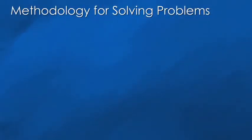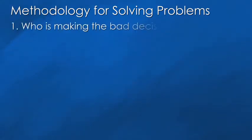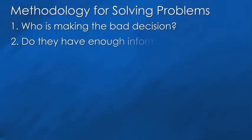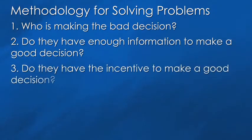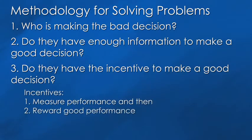You simply ask three questions: Who's making the bad decision? Do they have enough information to make a good decision? And do they have the incentive to do so? Remember, incentives have two pieces. You have to measure performance and then you have to reward good performance.